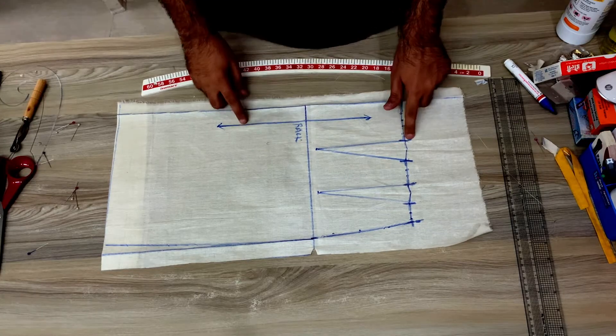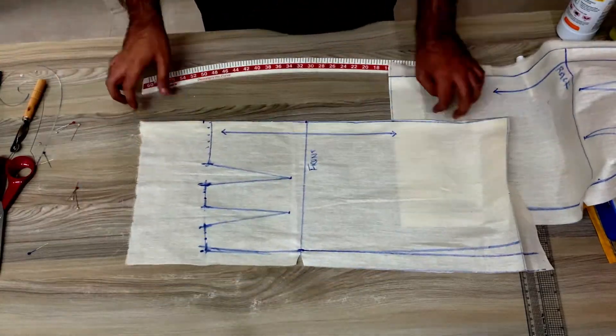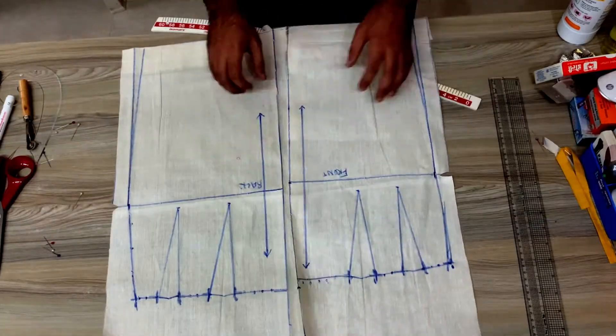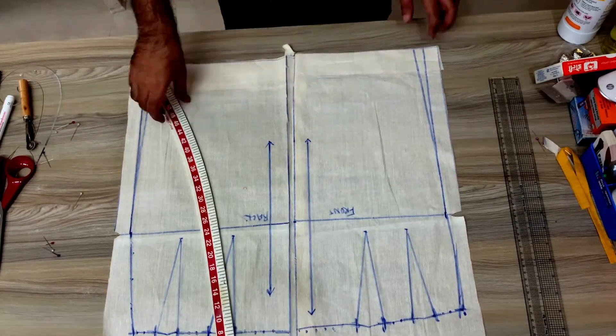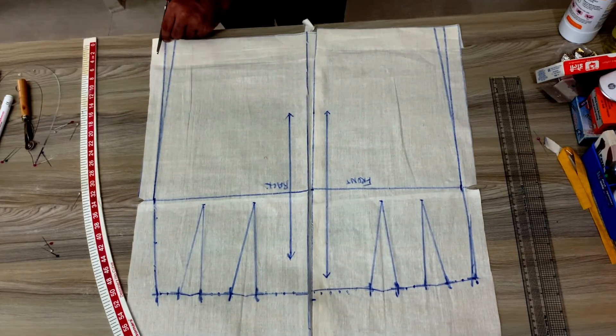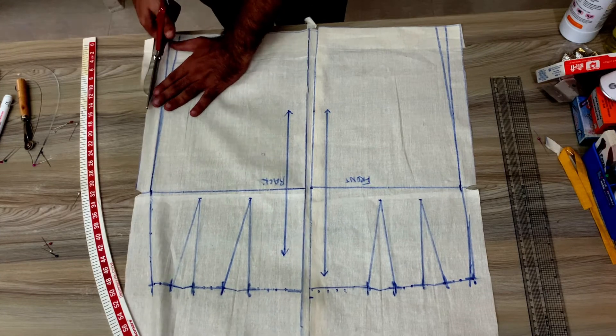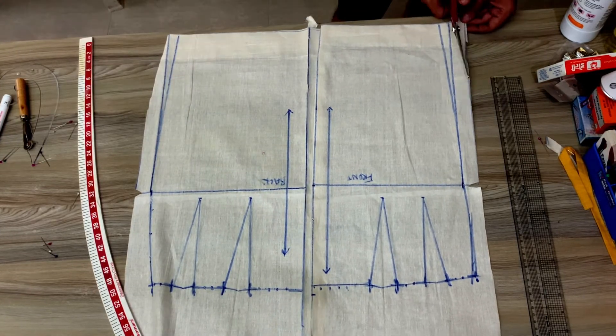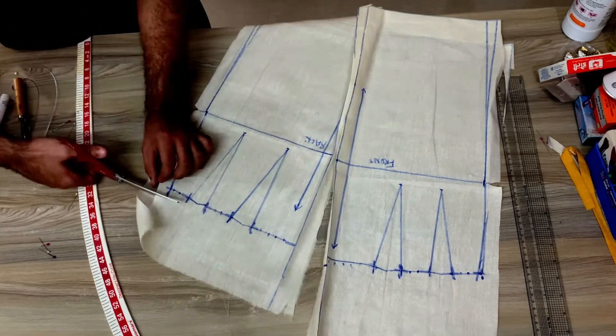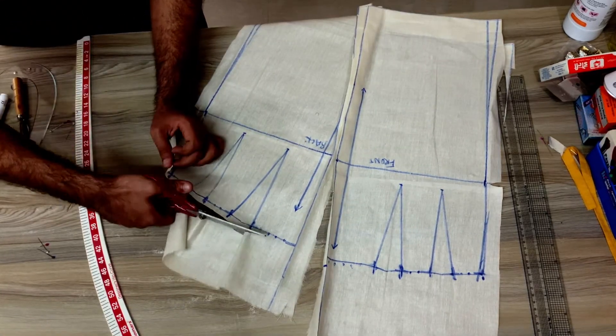Now the truing part I'm going to take it super fast because you guys know already how we trued the darts. The same way we are going to do the darts, and then we are going to go slightly in half an inch to an inch from the hem because we are making a pencil skirt, so we are going to taper it a little in rather keeping it straight.